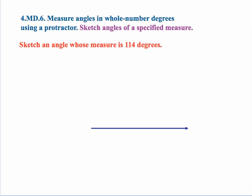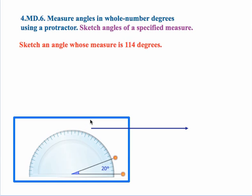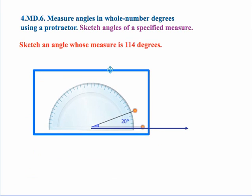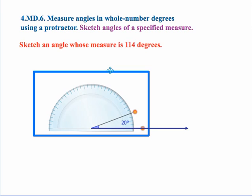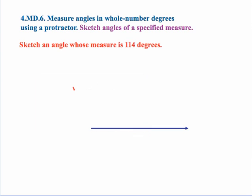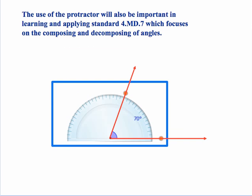The standard also calls for sketching angles of a specified measure. So let's say the task is to sketch an angle whose measure is 114 degrees. So we're going to take our protractor place it to where the vertices align and then we're going to measure on here 114 degrees. And then what we need to do is go ahead and mark where we are which would be about here and then what students need to do is take that mark and then just complete the ray through there starting at the vertex and we've sketched an angle that's 114 degrees.